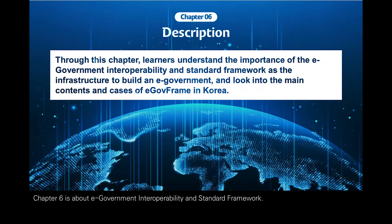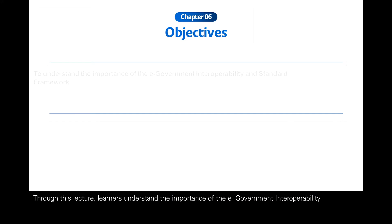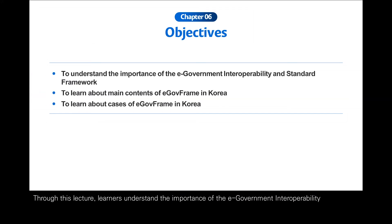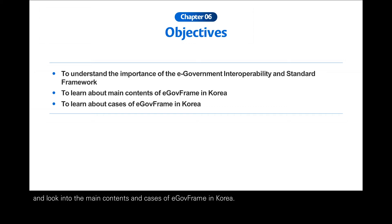Chapter 6 is about e-government interoperability and standard framework. Through this lecture, learners understand the importance of the e-government interoperability and standard framework as an infrastructure to build an e-government, and look into the main contents and cases of e-government frame in Korea.